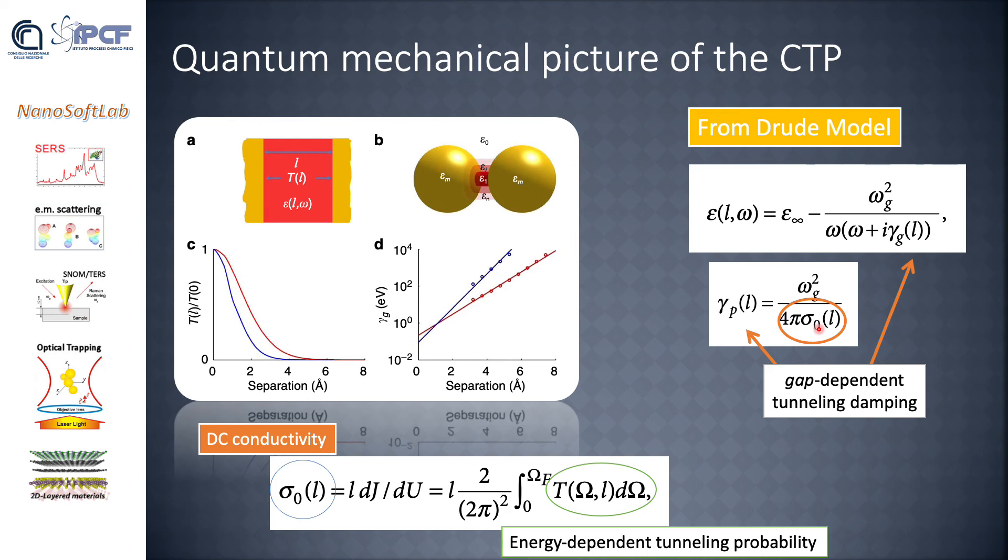The DC conductivity, or tunneling conductivity, in turn is proportional to an energy-dependent tunneling probability t that is a function of the energy ω and of the junction width L, integrated all over the energies from zero to the Fermi level. With these assumptions, the gap-dependent junction dielectric constant plays a role only when tunneling occurs. As shown in this figure, the tunneling probability and the associated tunneling conductivity rapidly go to zero when the junction length exceeds few angstroms. As a consequence, the tunneling damping increases by several orders of magnitude when the particle separation goes over the tunneling regime of few angstroms, making the Drude term in εg totally negligible.